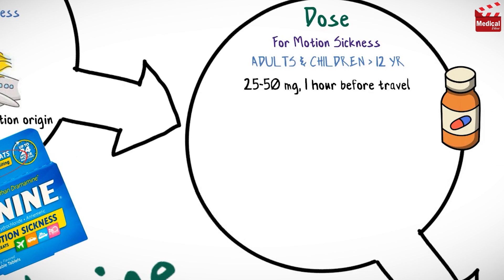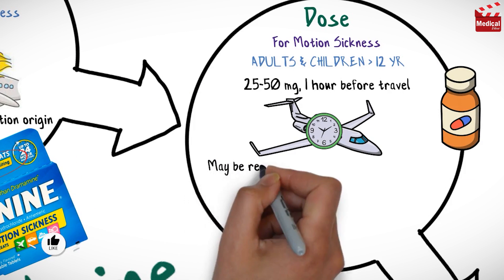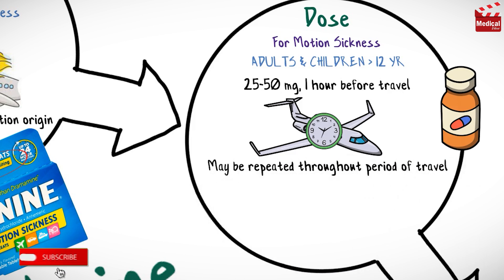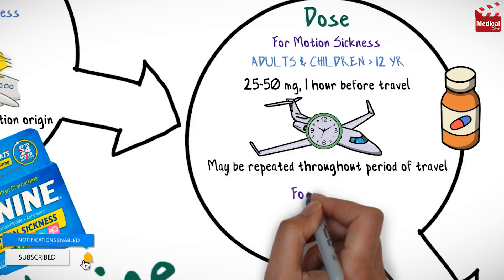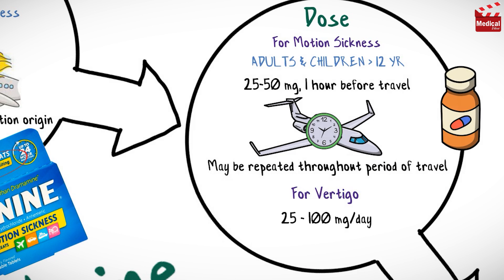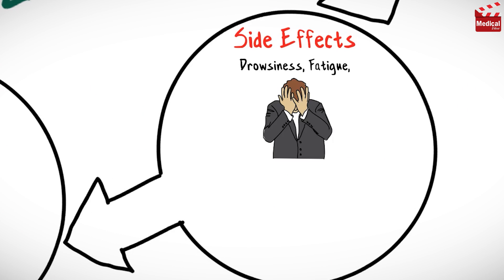The usual dose of meclizine for adults and children older than 12 years for motion sickness is 25 to 50 milligrams, one hour before travel. The dose regimen may be repeated throughout the period of travel. For vertigo, the usual dose is 25 to 100 milligrams per day in divided doses.